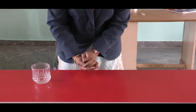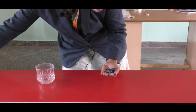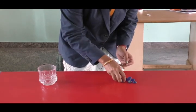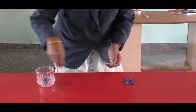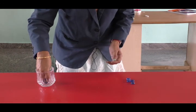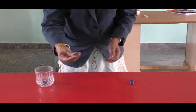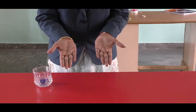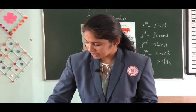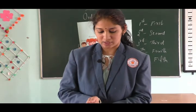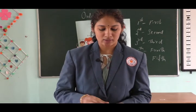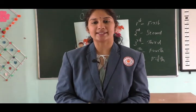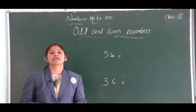We will repeat the same demonstration with 8 bubbles. First, let's make them into pairs: 2, 4, 6, 8. There are no bubbles remaining in my hand — the bubbles make perfect pairs. Let's count: 1, 2, 3, 4, 5, 6, 7, 8. Yes, 8 is an even number.